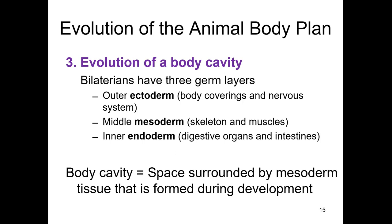The body cavity forms only in the triploblast group. Only on the triploblastic branch will some animals form a body cavity, which is a space within the mesoderm. The body cavity is a space surrounded by mesoderm tissue that forms during development. You have several cavities in your body — the digestive cavity is the entire path food would go from mouth to anus. But the body cavity is separate from that and is specifically surrounded by mesoderm.